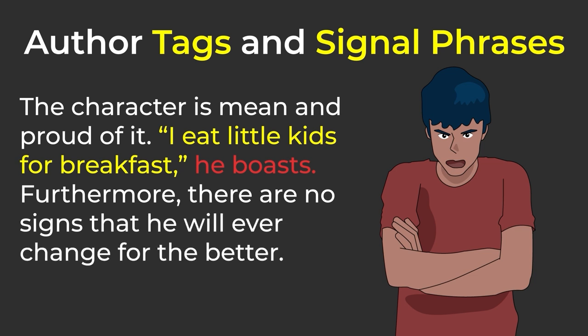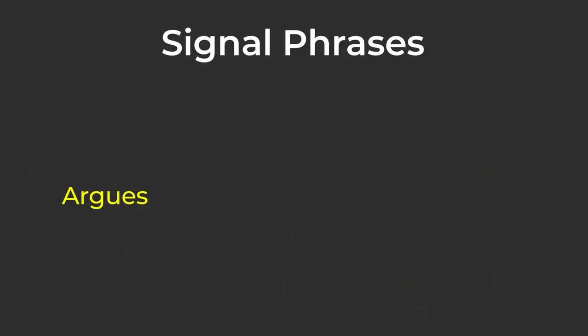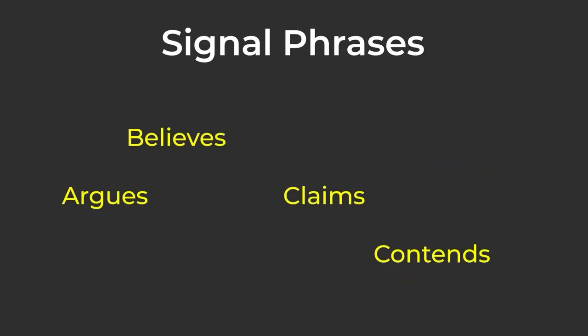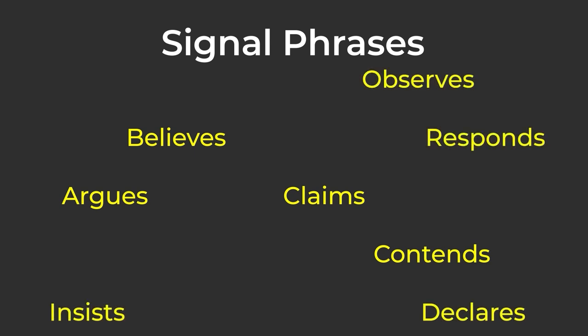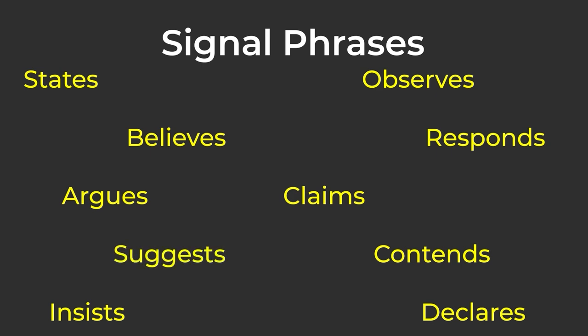Here are some verbs that you might use in your signal phrases: argues, believes, claims, contends, declares, insists, observes, responds, states, suggests. Look for verbs that communicate clearly and strongly.